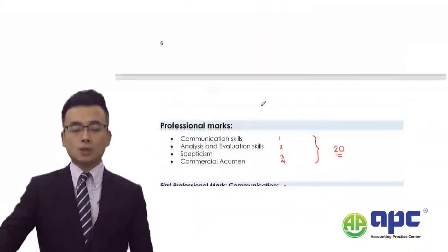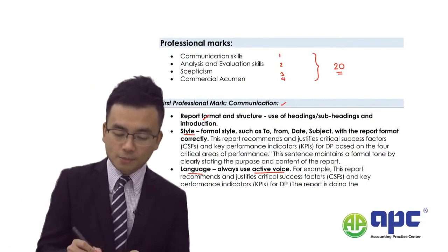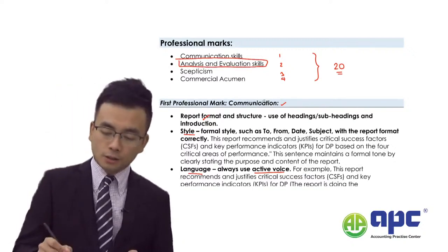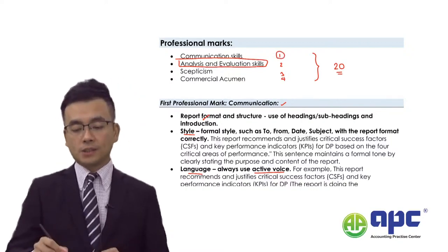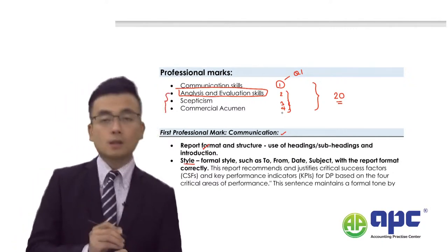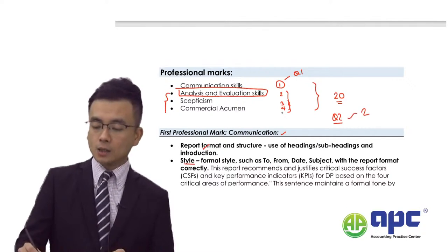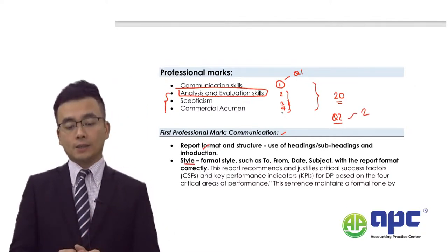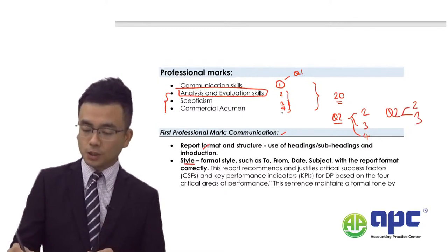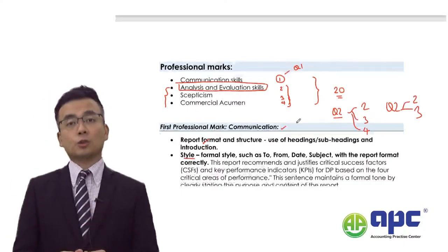Make sure you are absolutely familiar with all four professional marks. The analysis and evaluation skill will certainly be tested in every question in the APM. The communication skill will only be tested in question one. For questions two and three, a minimum of two professional skills will be tested. For example, question two may test the analysis evaluation skill plus either scepticism or commercial acumen. The same applies to question three — make sure you're ready for that.